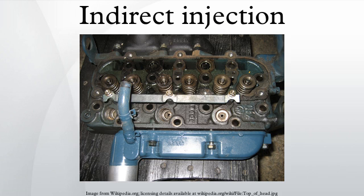Indirect injection in an internal combustion engine is fuel injection where fuel is not directly injected into the combustion chamber. Gasoline engines are usually equipped with indirect injection systems, wherein a fuel injector delivers the fuel at some point before the intake valve. An indirect injection diesel engine delivers fuel into a chamber off the combustion chamber, called a pre-chamber, where combustion begins and then spreads into the main combustion chamber. The pre-chamber is carefully designed to ensure adequate mixing of the atomized fuel with the compression-heated air.